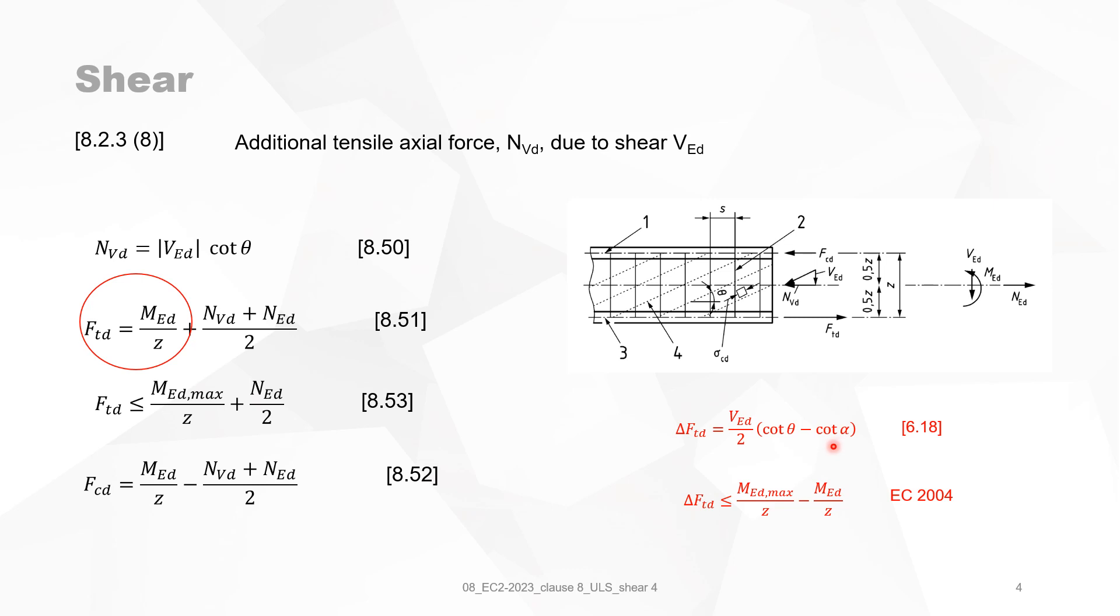except that this formula was for inclined reinforcement. So if cotangent alpha or with alpha equals to 90 degrees, you compare it with this section here. Then you will see that cotangent alpha is 0. The same applies for the maximum value. For the maximum value when NED is 0, then you will see that FTD or FTD equals the delta FTD plus MED over Z. So it's also the same formula.